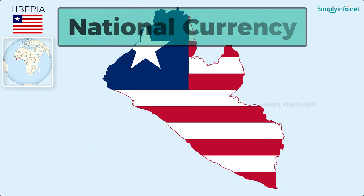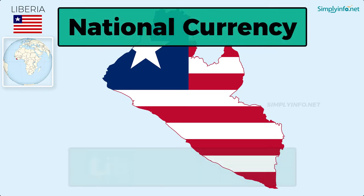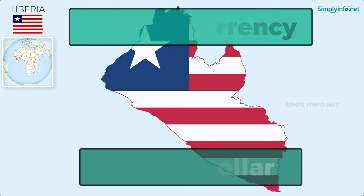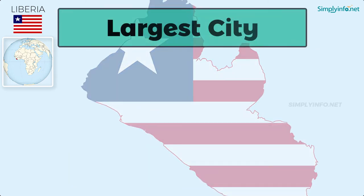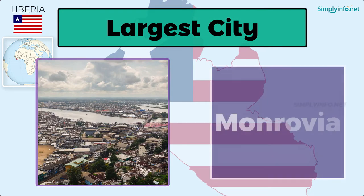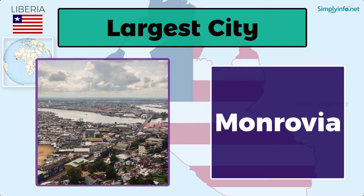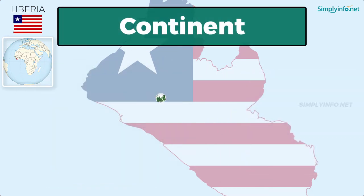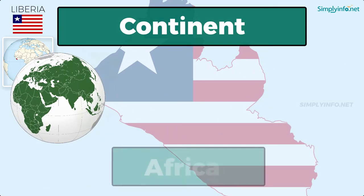National currency: Liberian dollar. Largest city: Monrovia. Continent: Africa.